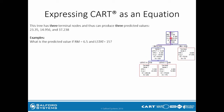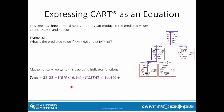The first path goes from the root node all the way to terminal node 1, defined by this purple line. We write this through indicator functions. The first part of our equation is 23.35, our predicted value, multiplied by the indicator for the first condition — RM less than or equal to 6.94 — and multiplied by the indicator for the second condition — LSTAT less than or equal to 14.4. Both conditions must be satisfied for the predicted value to be 23.35.